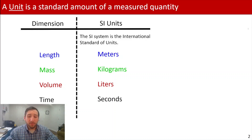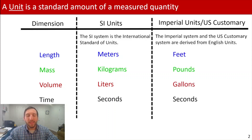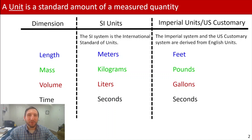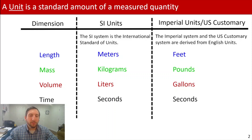The other most common system of units is called imperial units, or US customary units, or the American engineering system. It's all mixed together because they all derive from English units. With these units, you may see feet, pounds, gallons, and seconds. Time is actually pretty consistent across unit systems — it's been standardized that everyone uses seconds as the base unit.